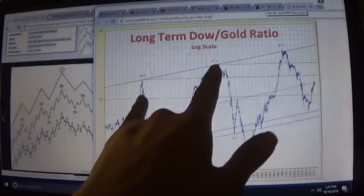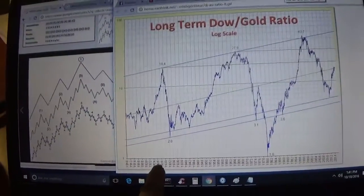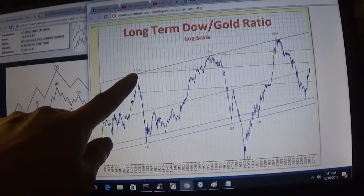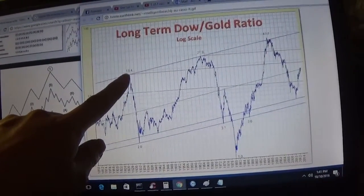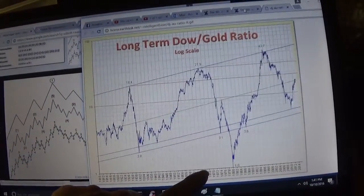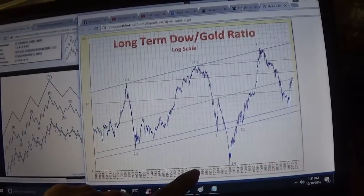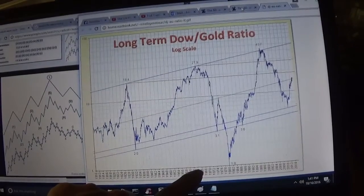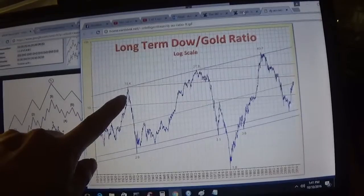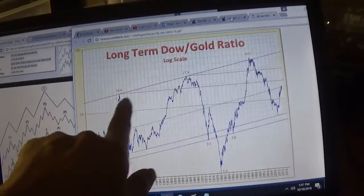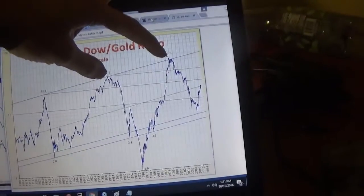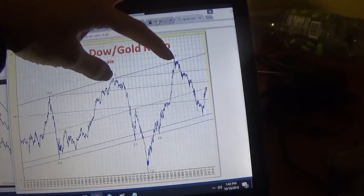This cycle right here was 1933, when Roosevelt took us off the gold standard, until 1966. '64 is when we stopped using silver coins, but I think gold stayed low for another 2 years. So that's 33 years right there. And then this cycle was another 34 years.